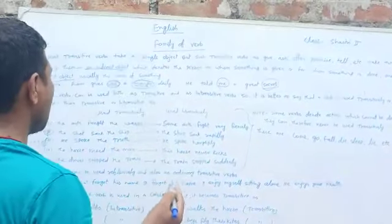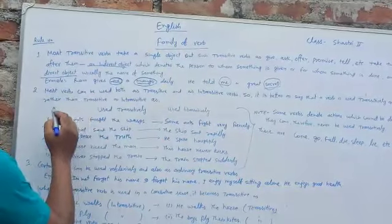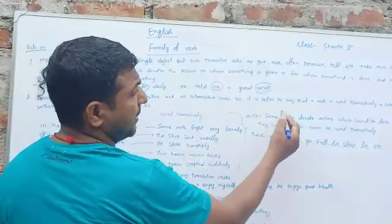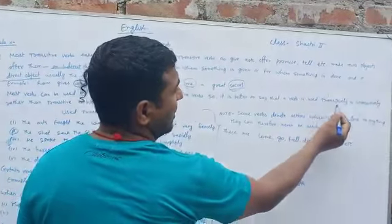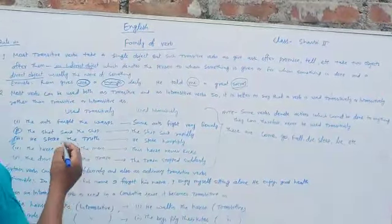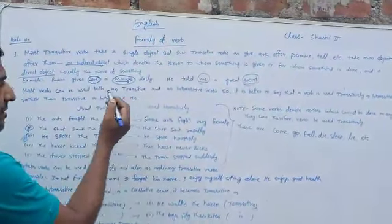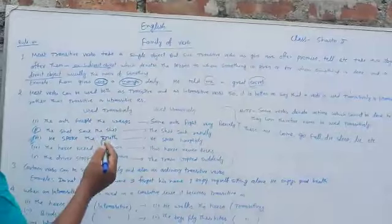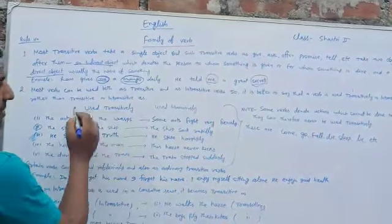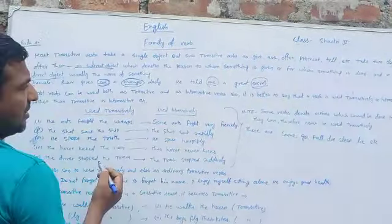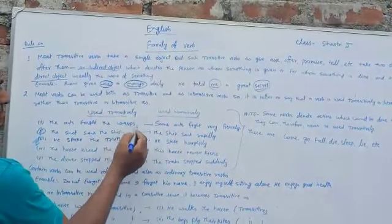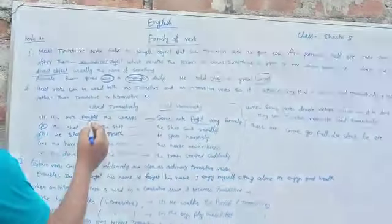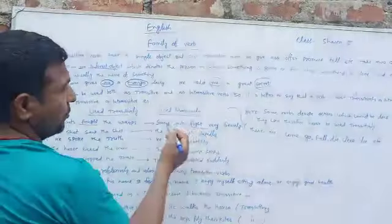In the next rule: most verbs can be used both as transitive and as intransitive verbs. So it is better to say that a verb is used transitively or intransitively rather than simply calling it transitive or intransitive. For example, the verb 'fight': 'The ants fought the wasp' — here 'fought' is used transitively. 'Some ants fight very fiercely' — here 'fight' is used intransitively.